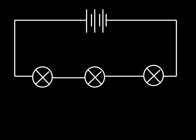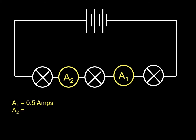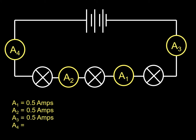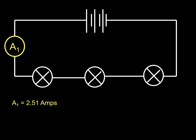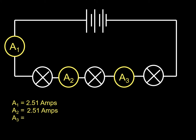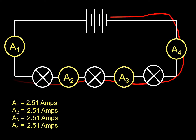It's not the same for parallel circuits, but in a series circuit — if that's 0.5 amps, the next one is 0.5, and that one is 0.5, and that one is 0.5. We've got a nice little rule: it's the same electricity going all the way around. Even if you measure to more decimal places, it doesn't matter — it's 2.51 amps everywhere. It's the same electricity all the way around.